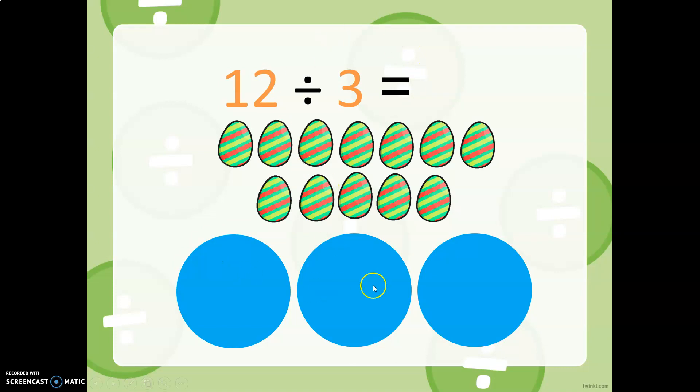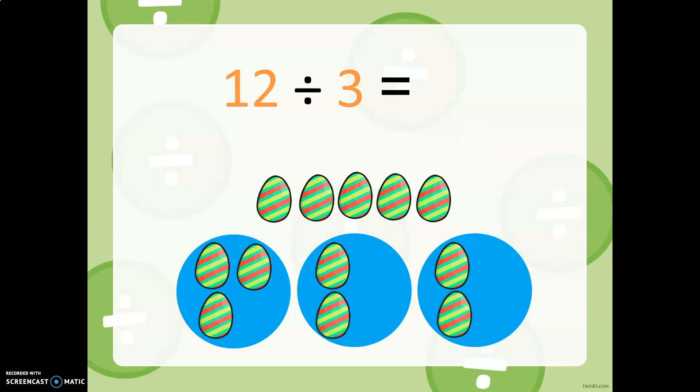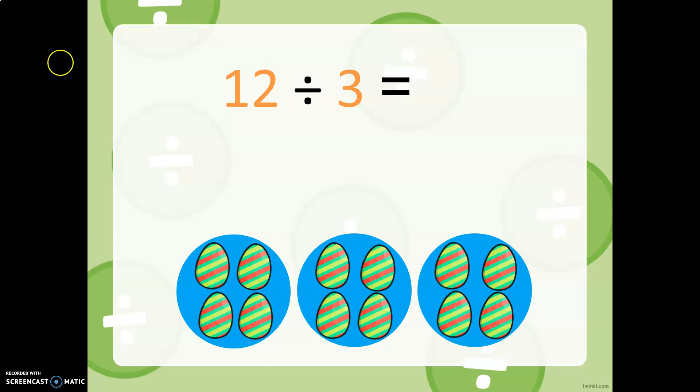Let's say these are baskets. So we have three baskets, and we have 12 eggs. So let's see how many eggs each basket gets. 12 eggs. All right, so divided evenly, 12 eggs into three baskets is four.